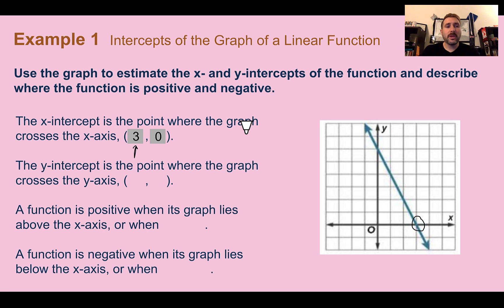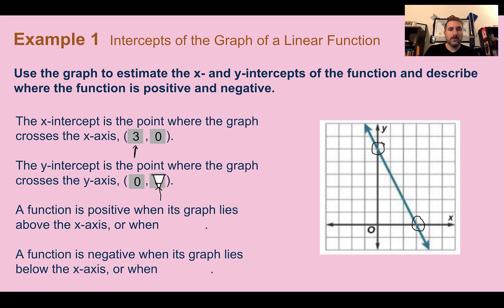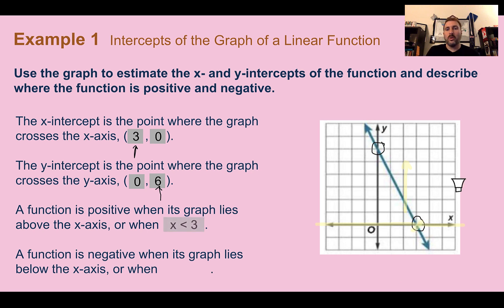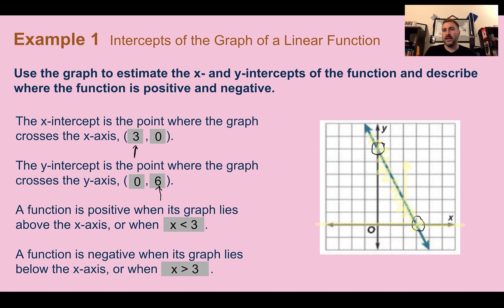This graph has only one x-intercept. The y-intercept is where it crosses the y-axis, at (0, 6), so the y-intercept is 6. The function is positive anywhere above the x-axis — it doesn't switch until it hits the x-intercept at 3, so the function is positive when x is less than 3 and negative when x is greater than 3.